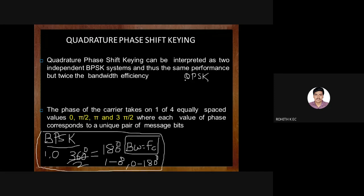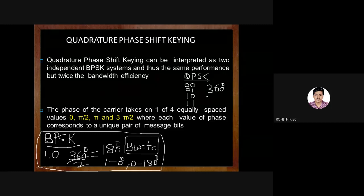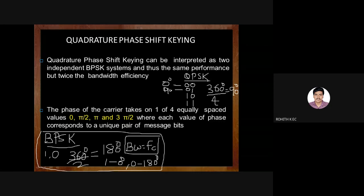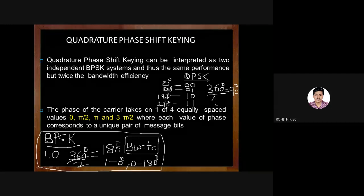Under QPSK we fit in four symbols: 00, 01, 10, and 11. The 360-degree circle is divided by 4, giving 90 degrees per symbol. So 00 is represented by 0° phase shift, 01 by 90°, 10 by 180°, and 11 by 270° phase shift.